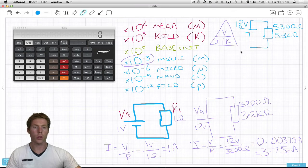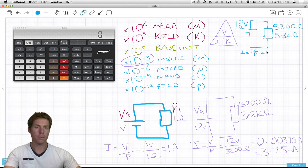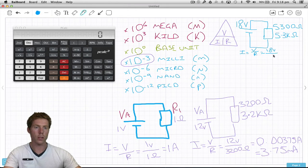How would we put it into the calculator? To get current we need voltage divided by resistance. Voltage is 18 volts, resistance is 5.3k.